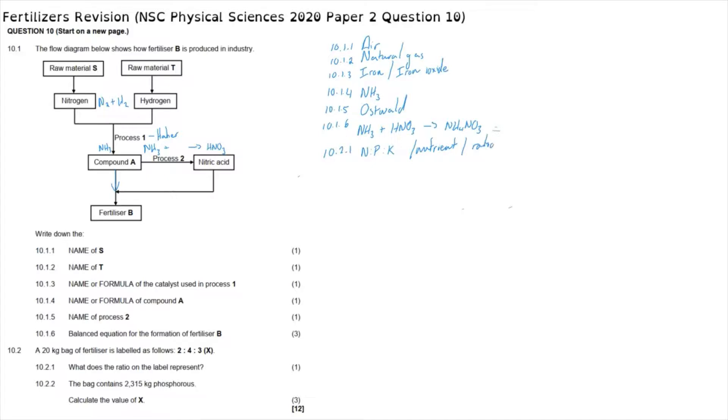Question 10.2.2: the bag contains 2.315 kilograms of phosphorus. Calculate the value of X. There are two ways this can be done. The simplest is to see that this bag is four ninths phosphorus. The bag is made up of two parts nitrogen, four parts phosphorus, and three parts potassium, which means the bag is made up of nine parts, of which four of them are phosphorus. We know that this value X is the percentage filler in the bag or the percentage of actual fertilizer in that bag. What we can say is: value X divided by 100 will give us the percentage. We can then say those two, the combination of those two multiplied by the mass of the bag, that being 20 kilograms, tells us that the amount of phosphorus is 2.315 kilograms.